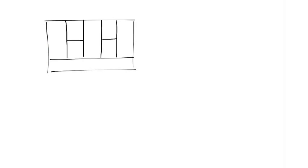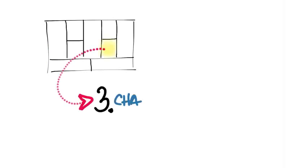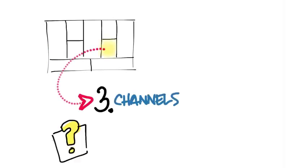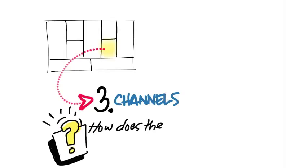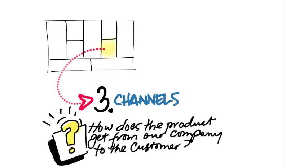Let's take a look at our business model canvas. Channels is just one of the nine boxes in the canvas, and it's a series of hypotheses of how does our product get from our company to our customer.